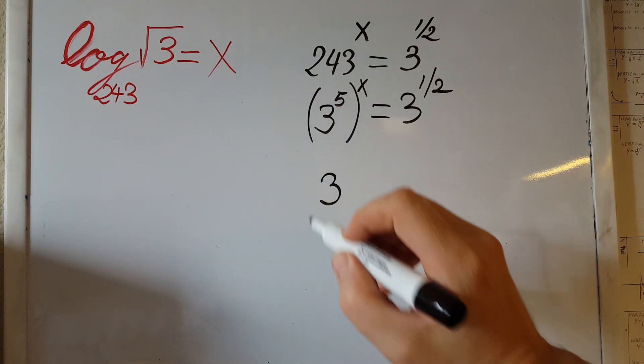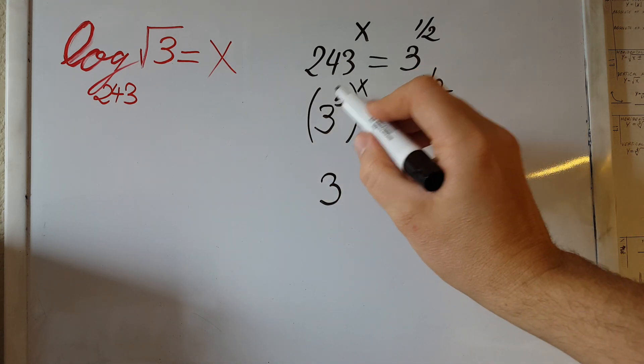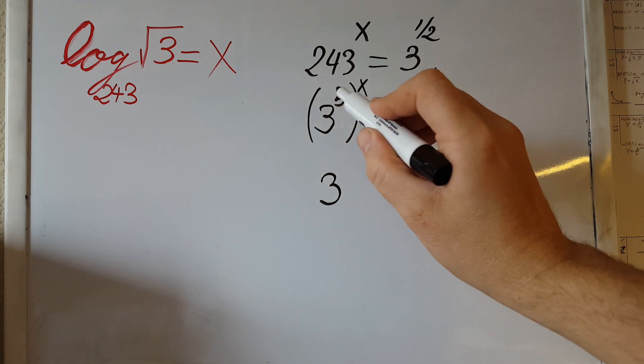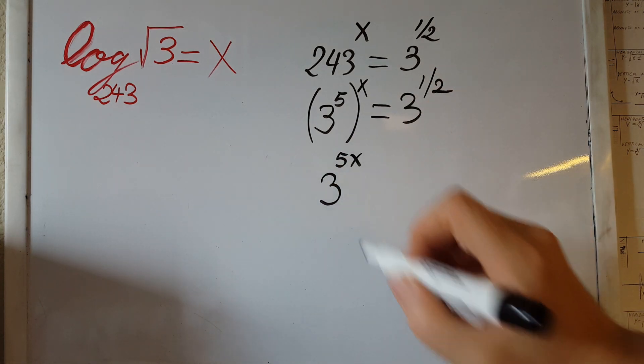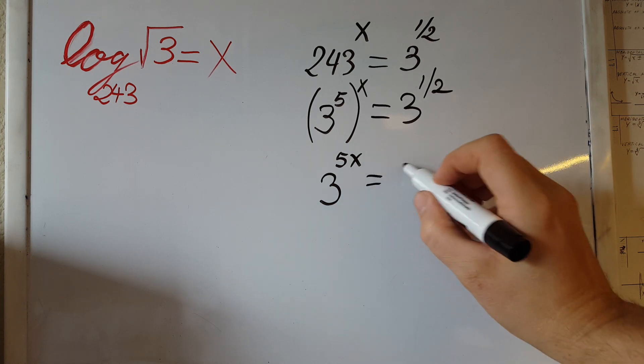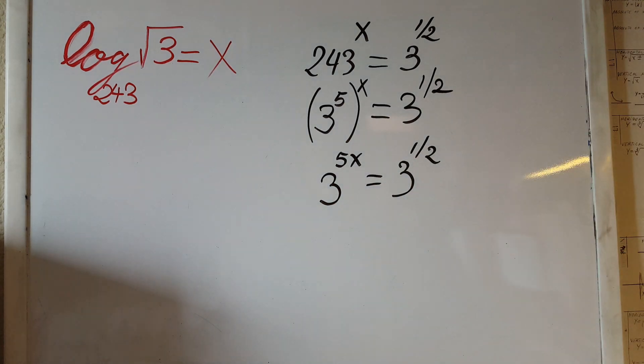Now we're going to take care of this where we have 3, and these two will be combined by simply multiplying, so it's going to be 3 to the power of 5x equals 3 to the power of one half.